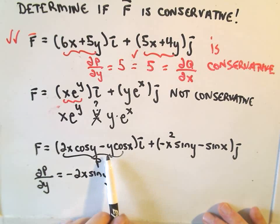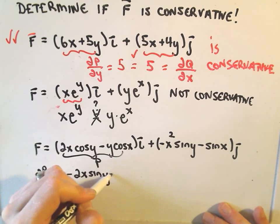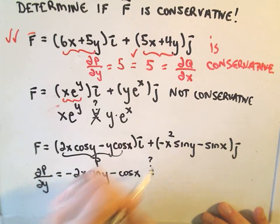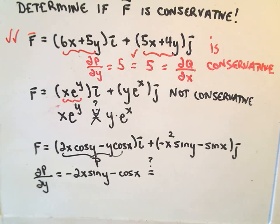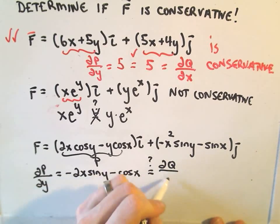Then if we take the derivative of the negative Y cosine X with respect to Y, treating cosine X like a constant, we'll simply get negative cosine X. And now we have to again ask ourselves, does this equal the partial of Q with respect to X?